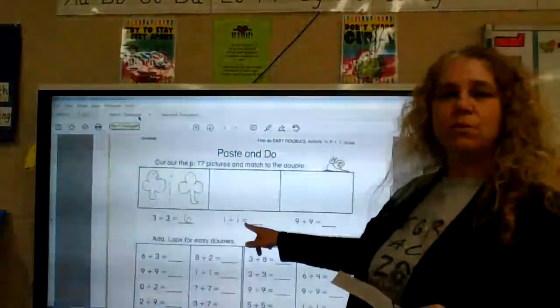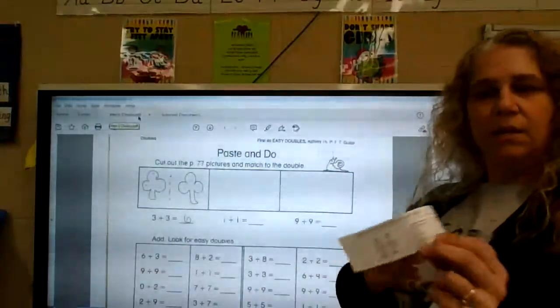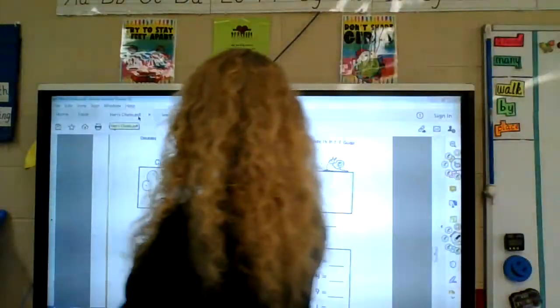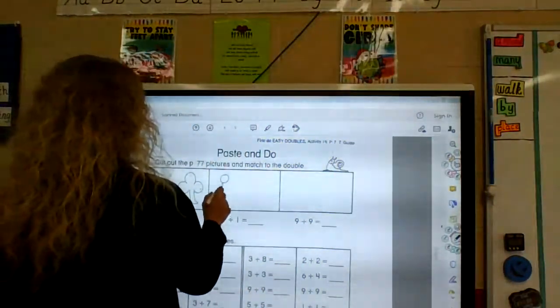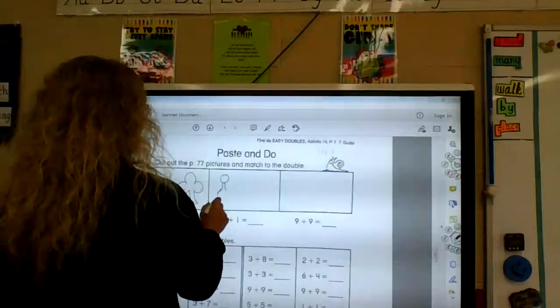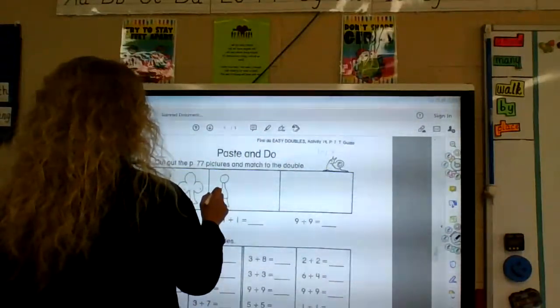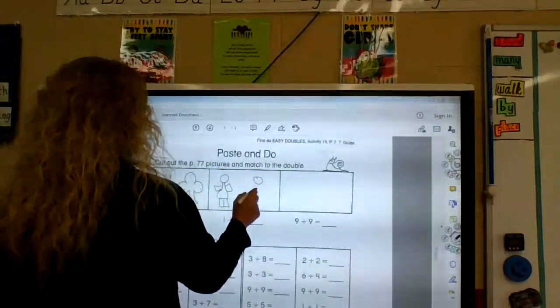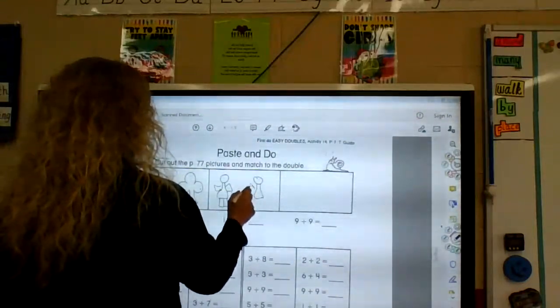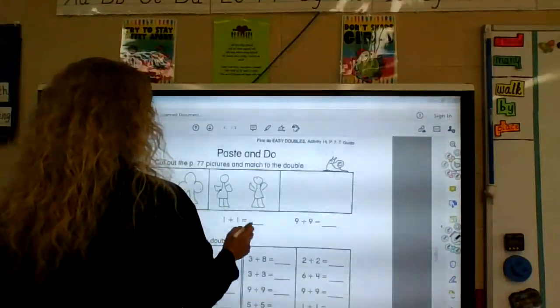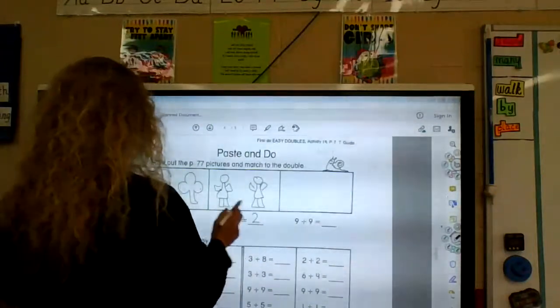All right. Now, we have one plus one. That's our person. Our two people. So, glue that one here. Doing the best I can here. Trying to hurry. Okay. So, we have one plus one equals two.